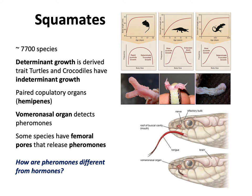Pheromones are chemicals secreted into the environment and detected by essentially the olfactory senses of animals. In the case of squamates, they have a vomeronasal organ. Every time a snake sticks out its tongue, it's taking chemicals from the air onto its tongue and then sticking it into the vomeronasal organ, located right in front of the eyes — they're actually detecting their environment that way, much like a dog's sense of smell.